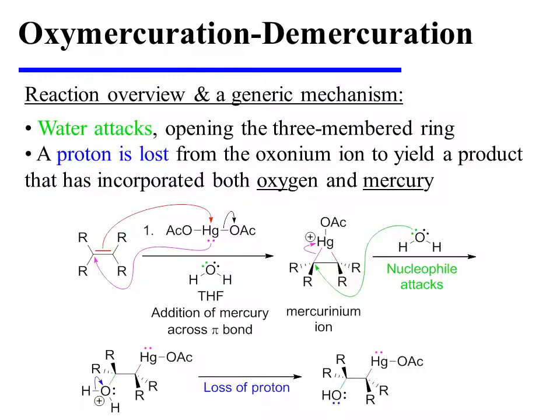Next, water attacks one of the two carbons of the mercurinium ion, displacing the mercury as the three-membered ring is opened. This results in an oxonium ion, which subsequently loses a proton to form a product that has incorporated both oxygen and mercury — hence the name oxymercuration.